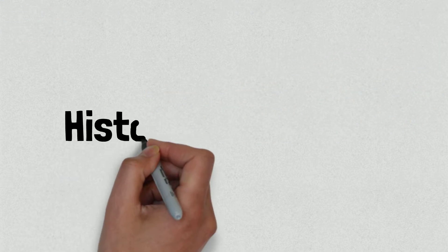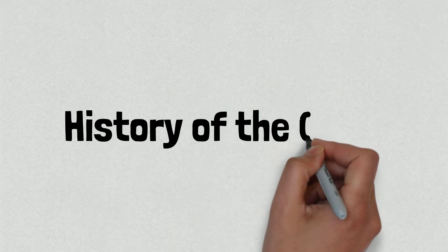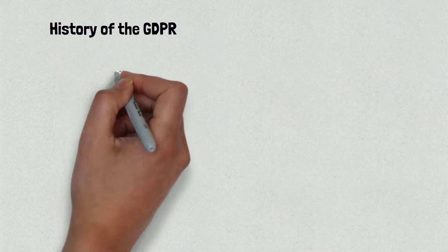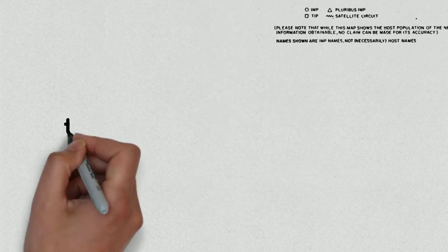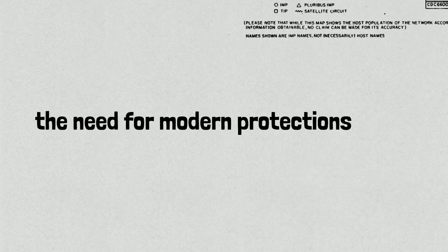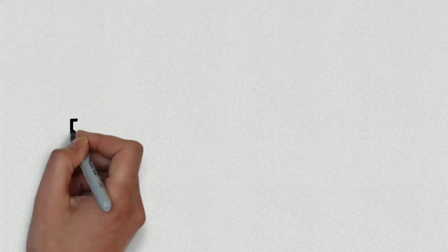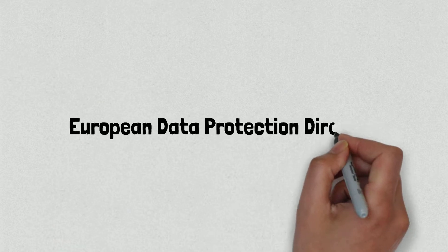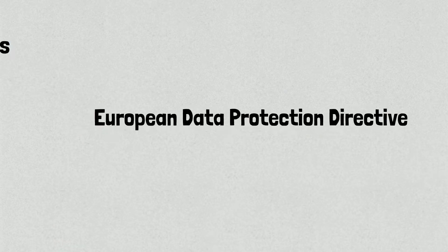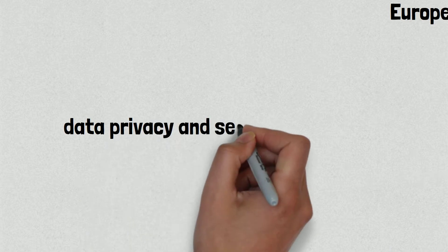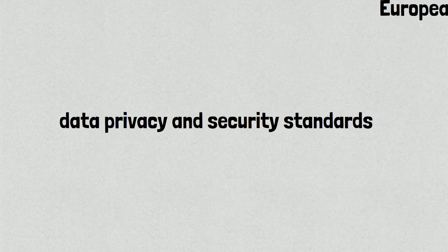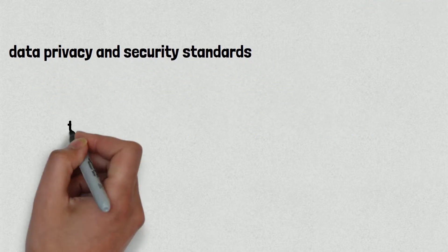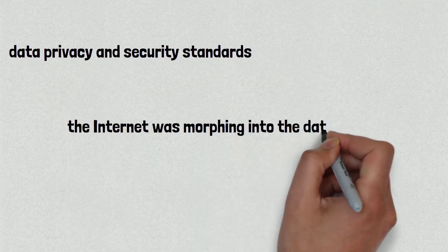Now, the history of the GDPR. As technology progressed and the internet was invented, the EU recognized the need for modern protections. So in 1995, it passed the European Data Protection Directive, establishing minimum data privacy and security standards, upon which each member state based its own implementing law. But already the internet was morphing into the data hoover it is today.